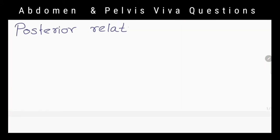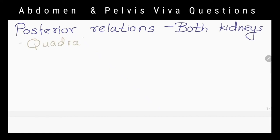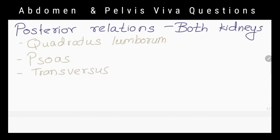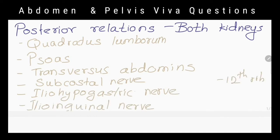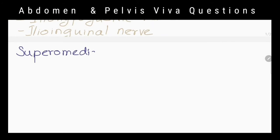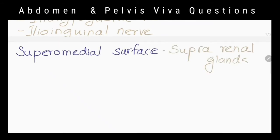Both kidneys are posteriorly related to quadratus lumborum, psoas, transversus abdominis muscles, subcostal nerve, iliohypogastric nerve, ilioinguinal nerve, and the 12th rib. Suprarenal glands lie against the superomedial surface of the kidney.